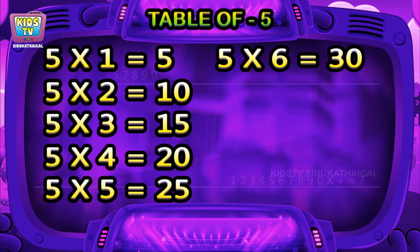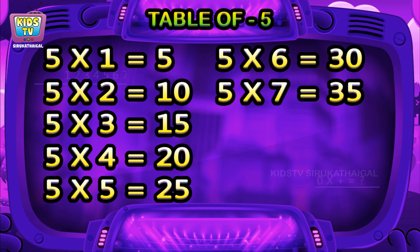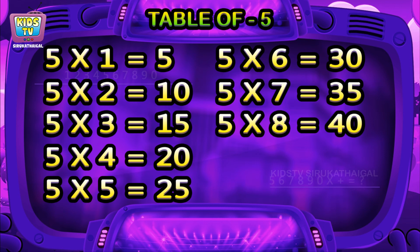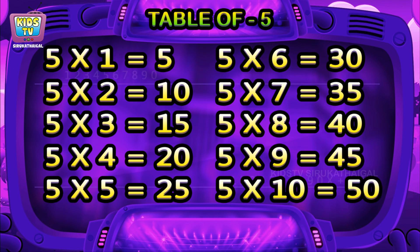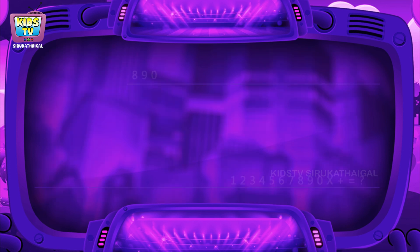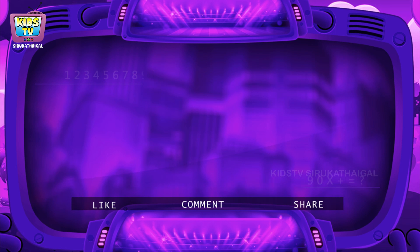Five six is thirty, five seven is thirty five, five eight is forty, five nine is forty five, five ten is fifty. Like and comment and share the video.